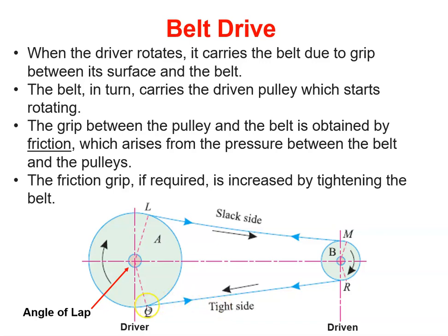Where the belt hits the pulley, this angle here, as it goes right around to where it comes off, we call that the lap angle. So we have a large lap angle here and a smaller lap angle here on this pulley.